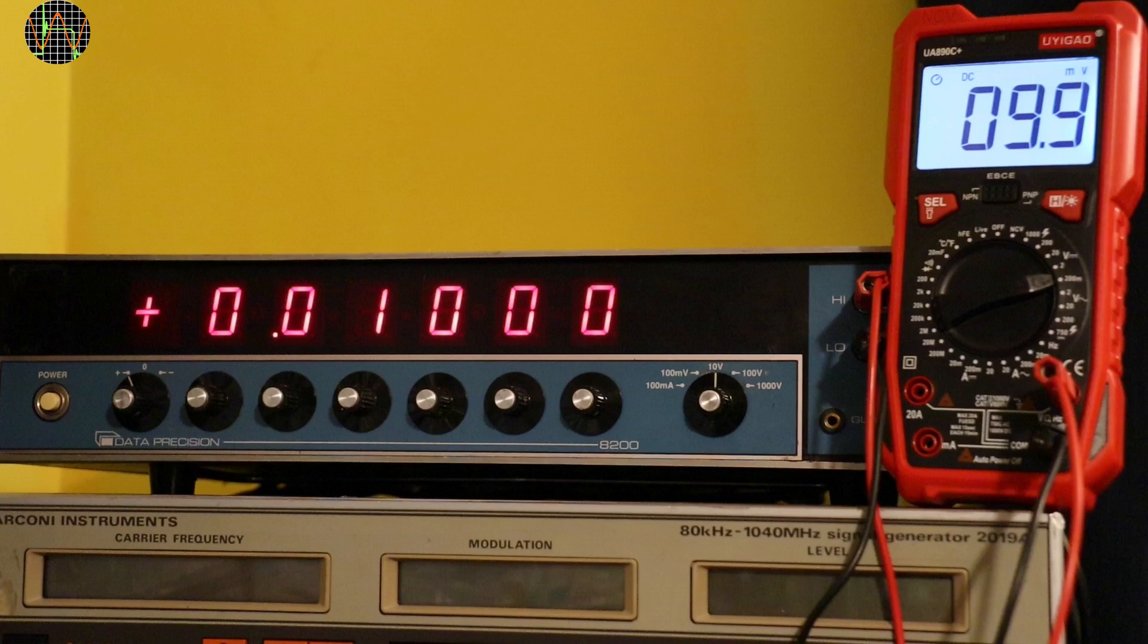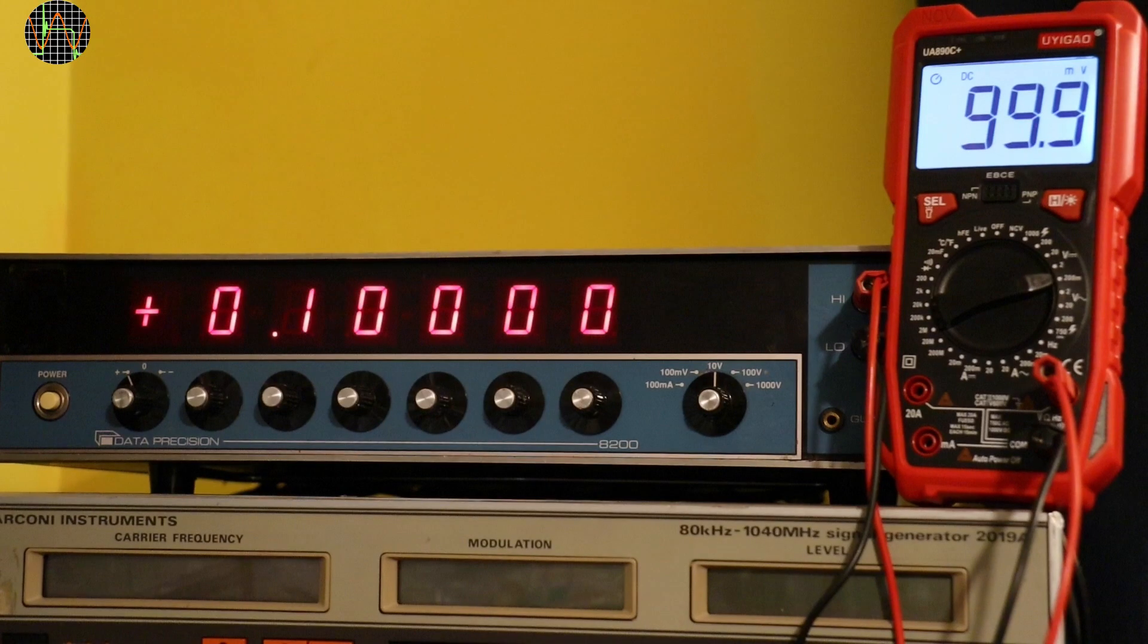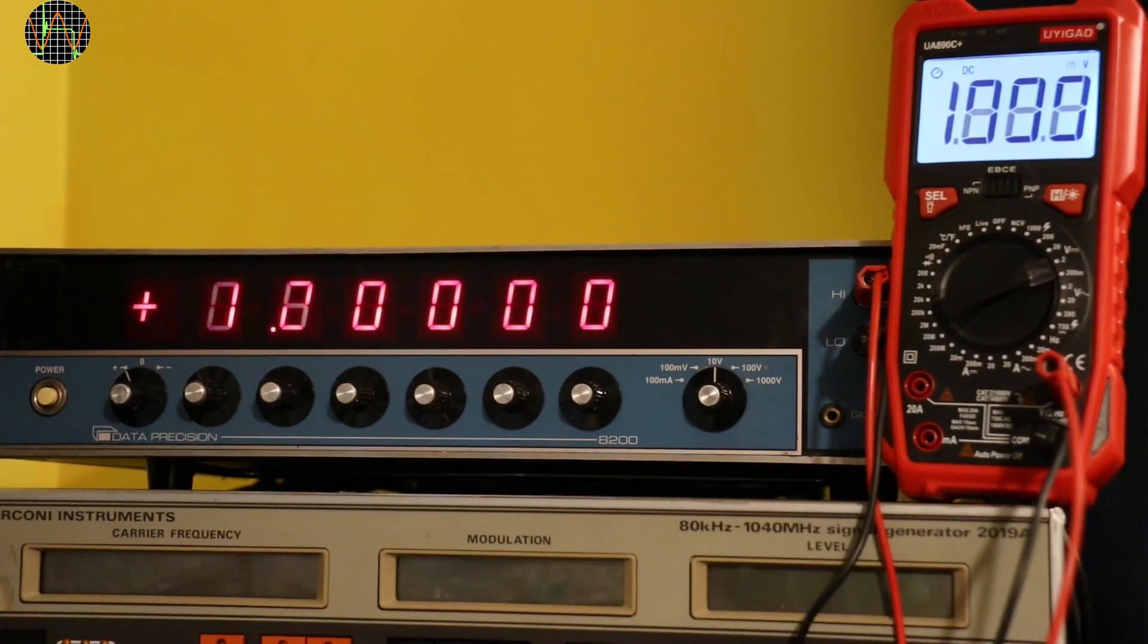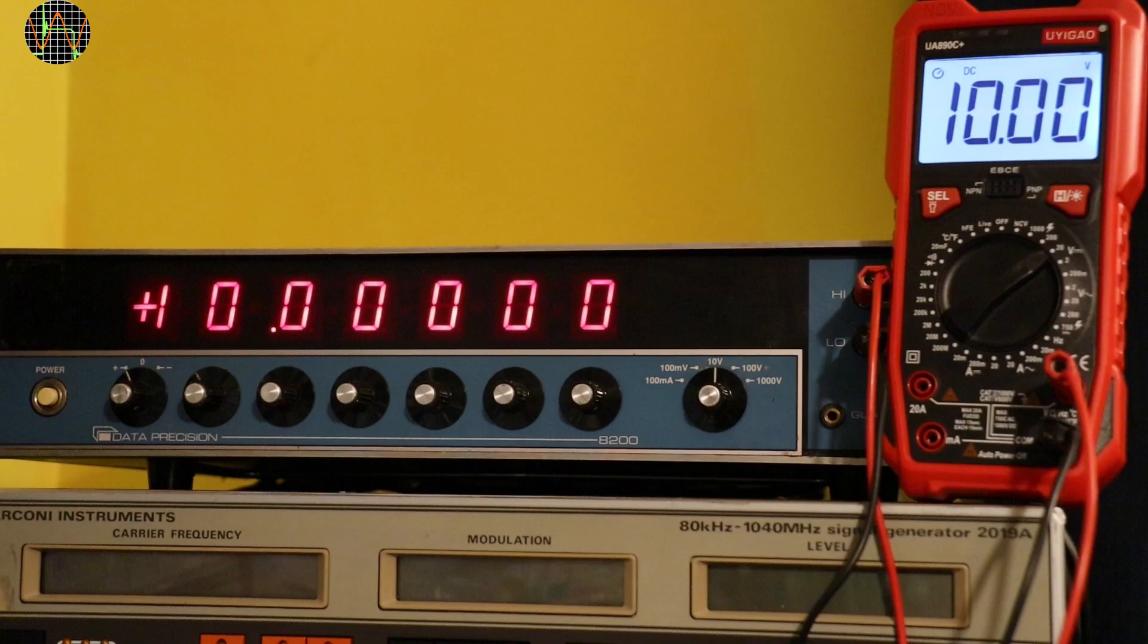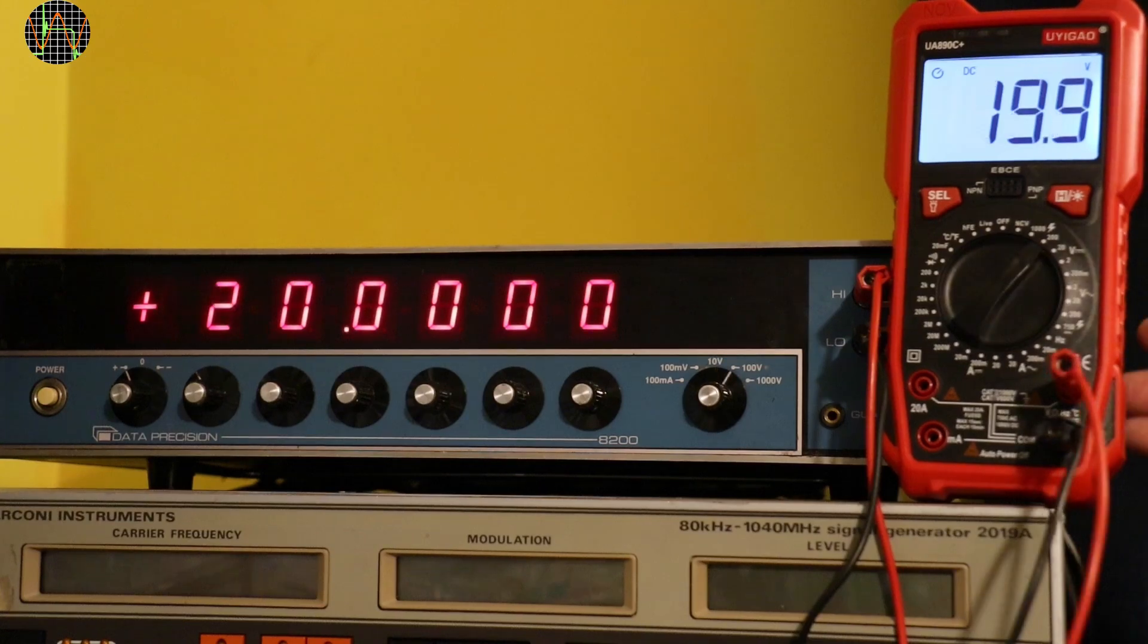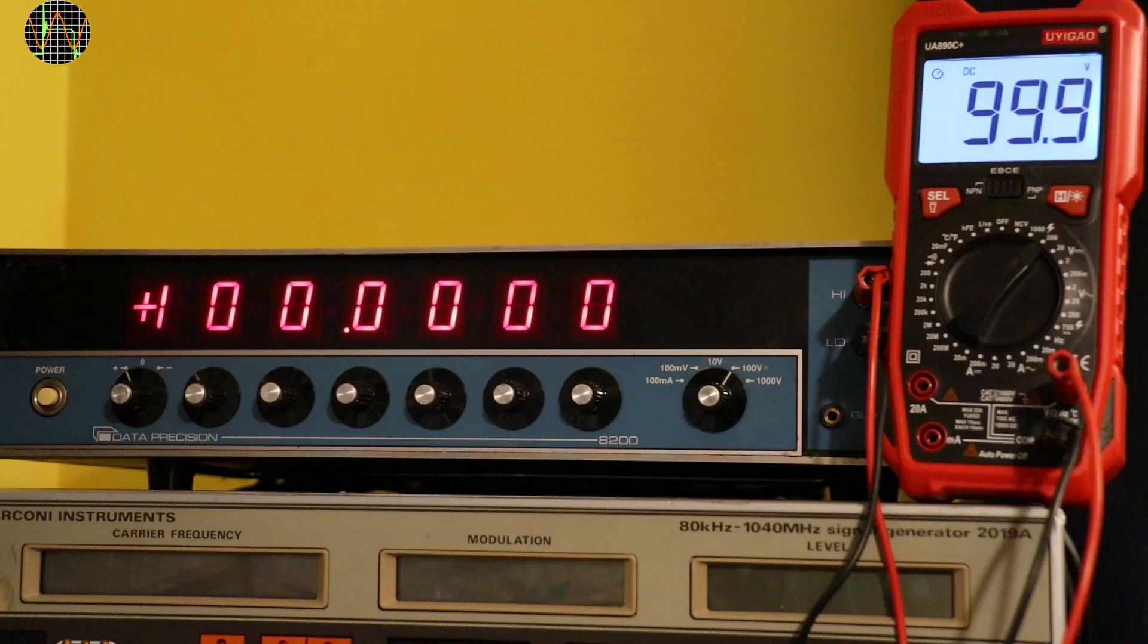For DC volts I am using my calibrator and I have to use the backlight for making the display more visible for the camera. Anyway, 10mV ok. 100mV also ok. 200mV fine. 1V spot on. 2V in the 20V range. 10V spot on. 20V in the 200V range. 100V. The meter is actually pretty accurate. No complaints here.